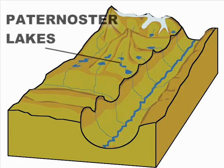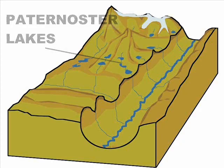Paternoster Lakes. These are a series of lakes strung together by a single stream or braided stream system. These occur where a glacier has receded and is created by terminal moraines.